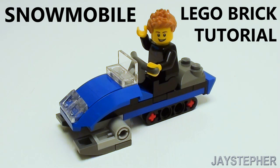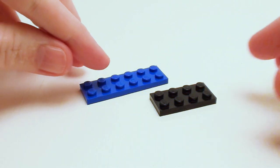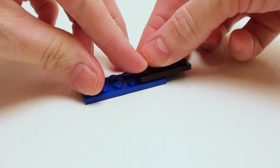Let's build a snowmobile that is compatible with LEGO minifigures for today's LEGO brick tutorial. Start with a 2 by 6 plate, then place a 2 by 4 plate on the right-hand side.